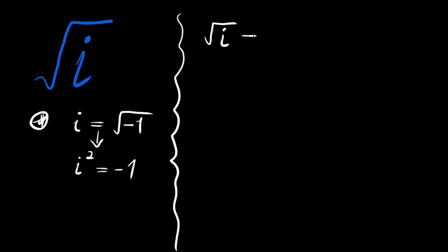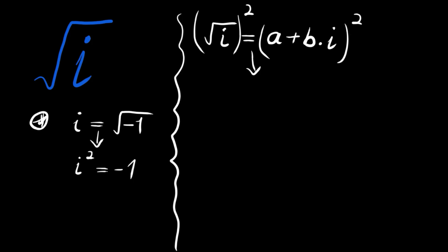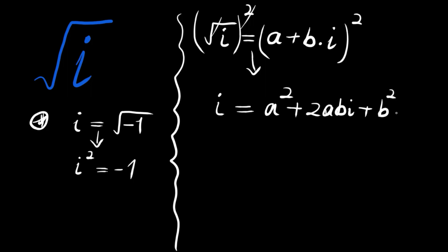Now let's begin the solution. We will set this square root of i equal to some random complex number, say a plus b times i — any complex number can be written as a plus bi. Squaring both sides, the left hand side simplifies to just i, and the right hand side gives a squared plus two times a times bi plus b squared times i squared.